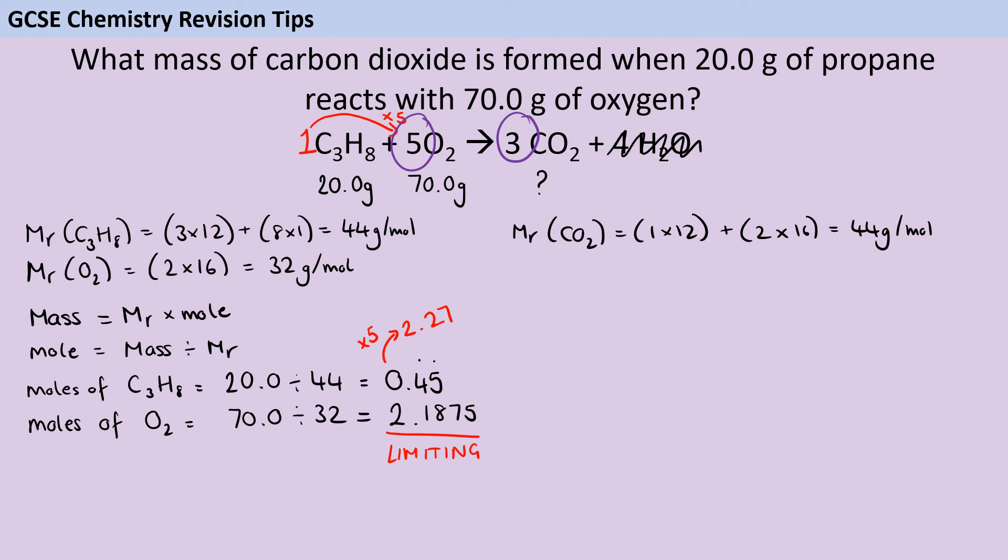So I'm going to take my 2.1875 and divide it by the five—divide it by the thing that it is—and multiply it by the three, the thing I'm looking for. And that tells me that I'm going to make 1.3125 moles of carbon dioxide.